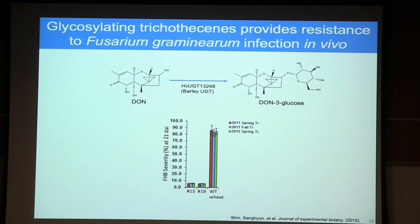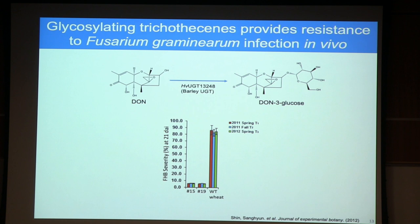They infected that wheat crop with Fusarium. Wild-type wheat was infected, but versions expressing this enzyme were unable to be infected — at least the infection did not spread. You might think: problem solved. However, as mentioned, there are many species of Fusarium producing a variety of trichothecines, and this UGT has only been proven to glycosylate DON and a couple others. It only provides resistance to Fusarium graminearum and not to other Fusarium species that produce trichothecines like T-2 toxin.